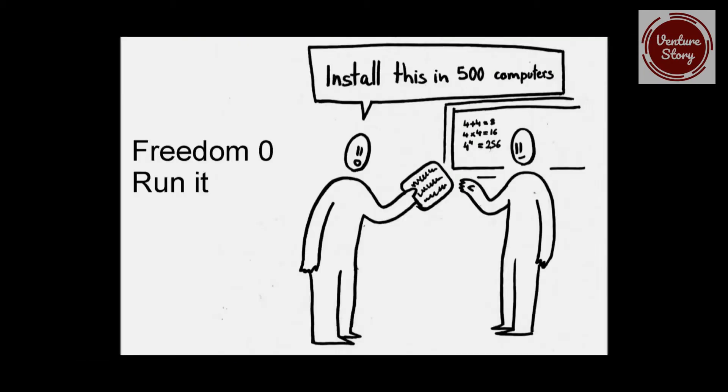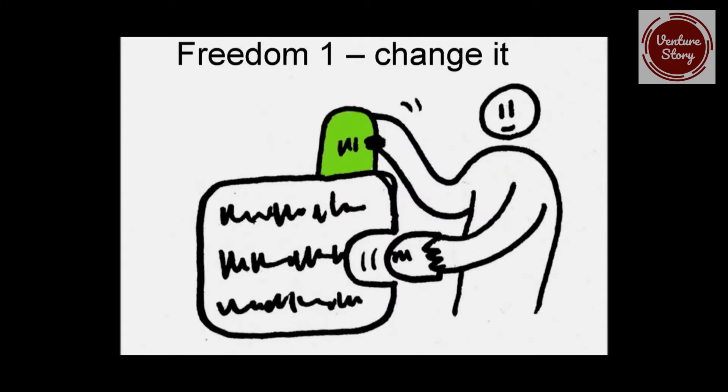Freedom Zero is the freedom to run the program as you wish for whatever purpose. Freedom One is the freedom to study the source code of the program and change it so it does the computing you want it to do.